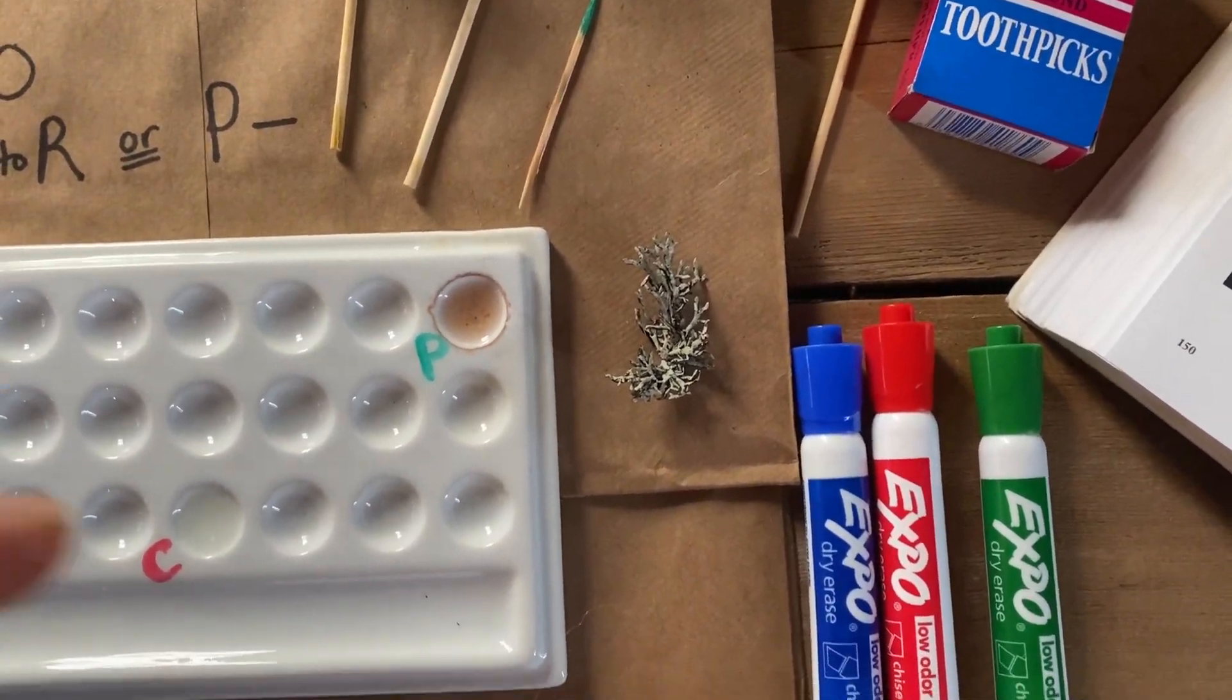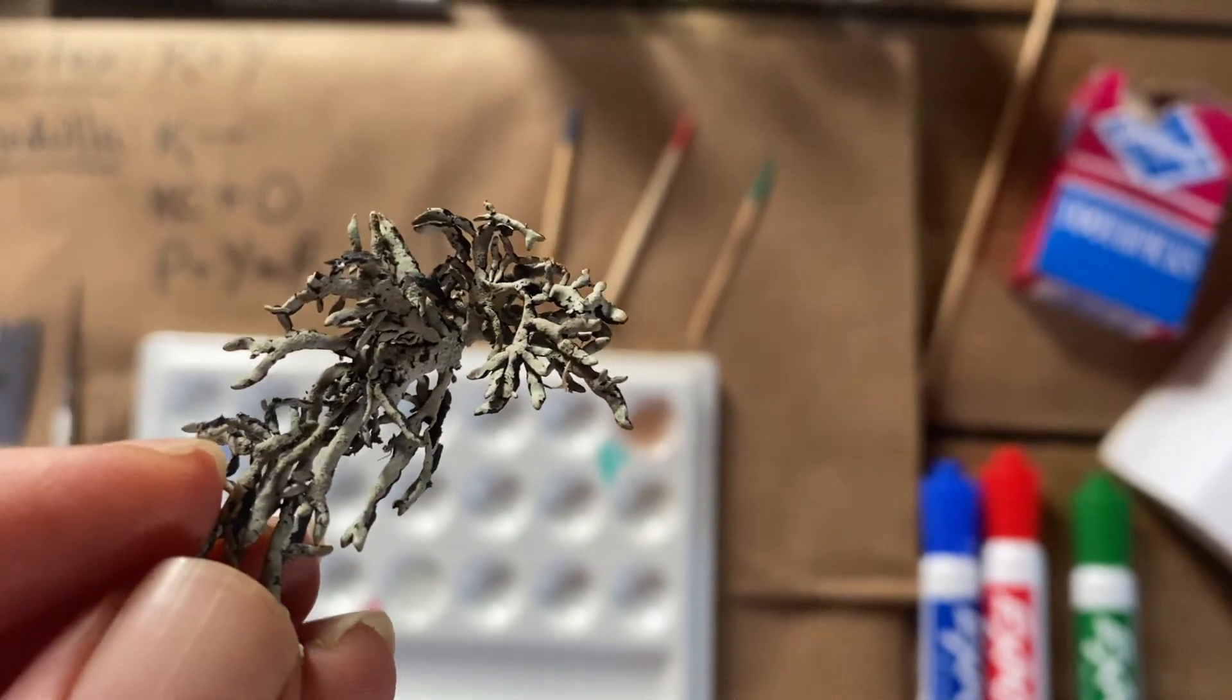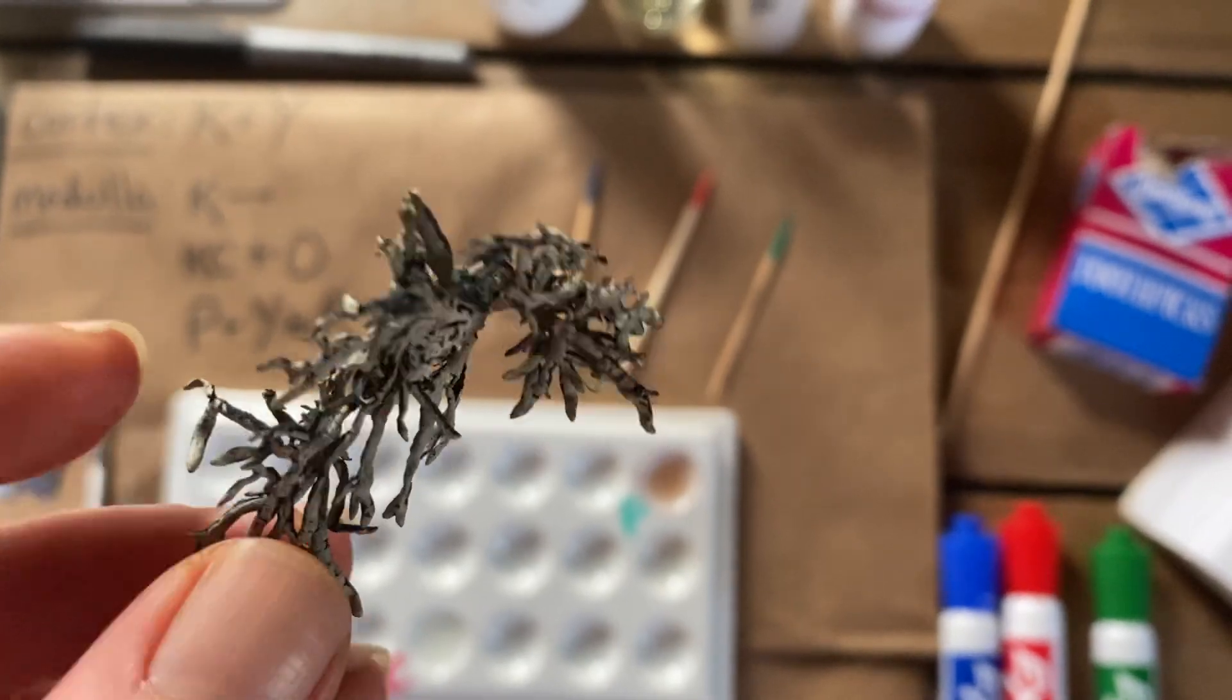Most importantly, we have our lichen sample here that needs identifying. And I've actually already decided that this is the genus Hypogymnia based on the hollow lobes of the thallus.